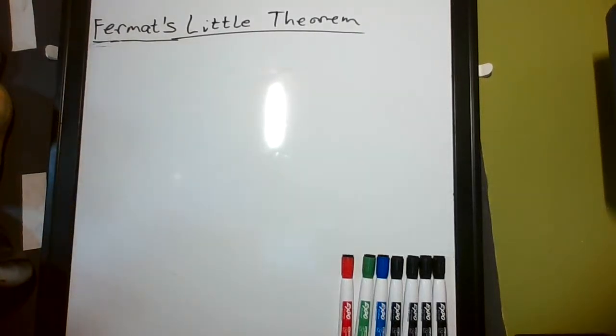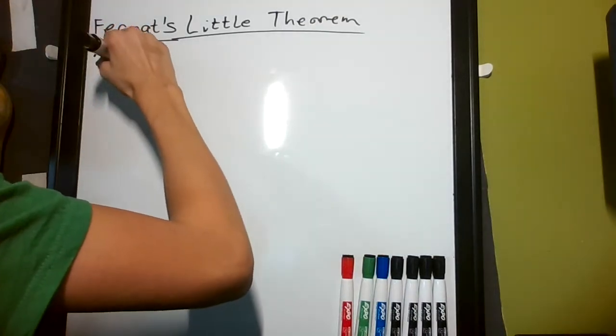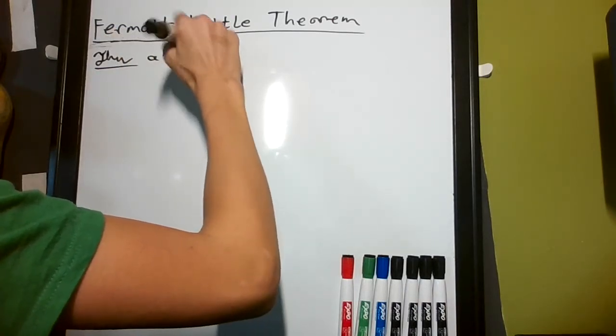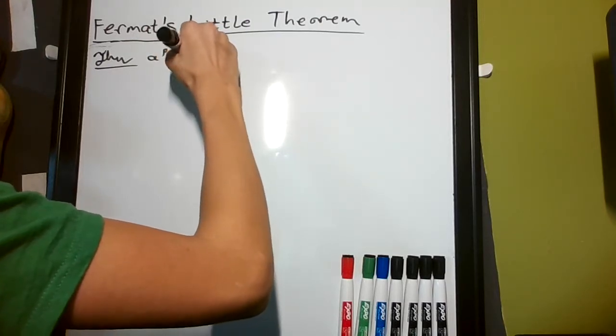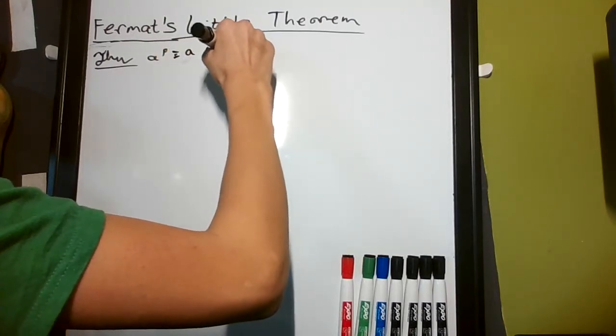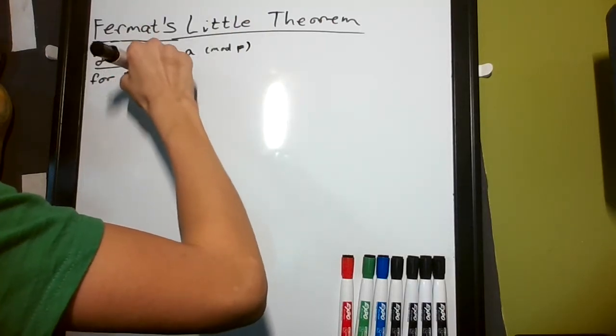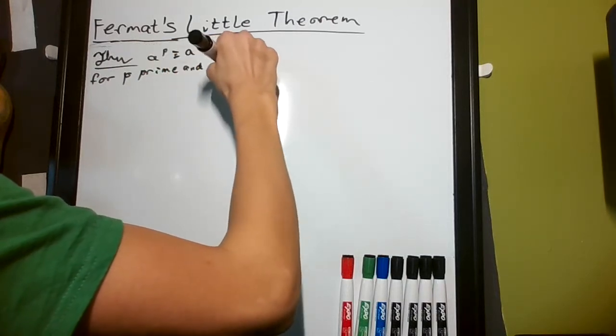In this video, I'll be proving Fermat's Little Theorem. I'll be assuming knowledge of modular arithmetic. The theorem states: a to the p is congruent to a mod p, or equivalently a to the p minus a is congruent to 0 mod p, for p prime and a an integer.